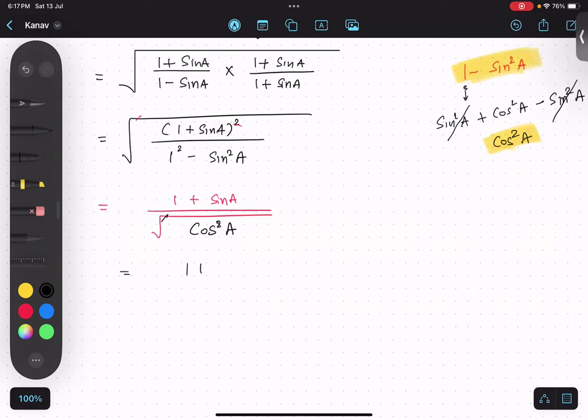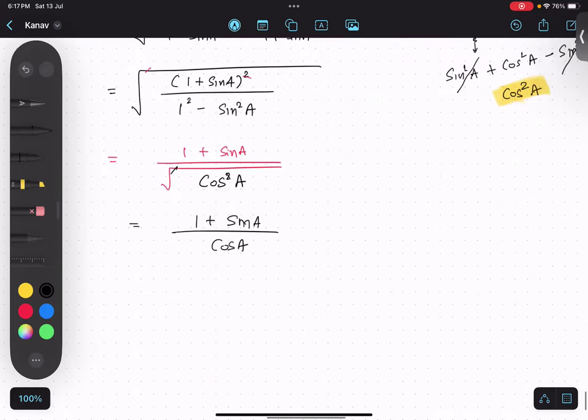So one plus sine A upon cos A. What do we need? It's a monomial in the denominator, so give it to both terms.